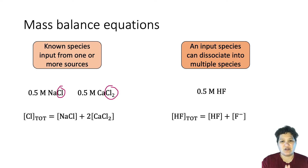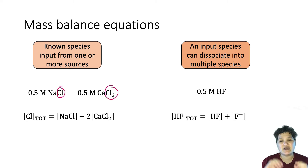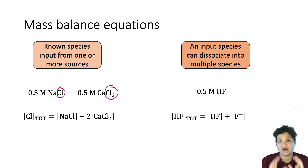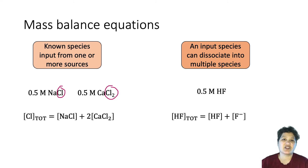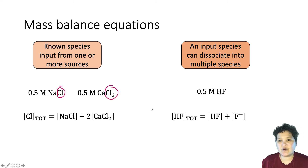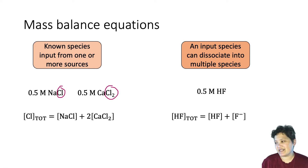You originally put in 0.5 molar. If you add up the concentration of HF and the concentration of F⁻, that will still equal 0.5 molar. We don't know how it's distributed between those two yet — we'll figure that out. But those are the two examples of mass balance.